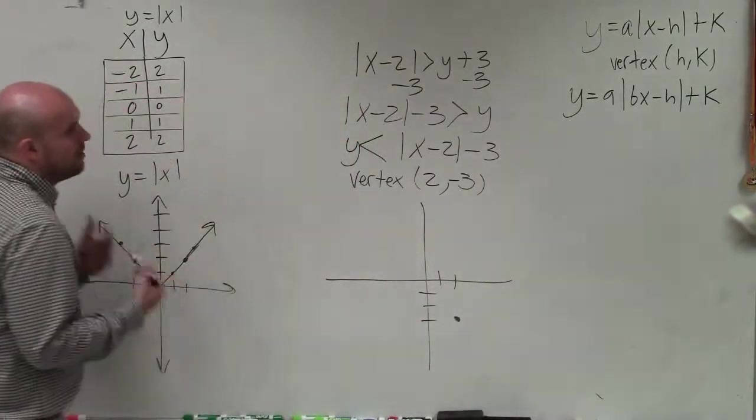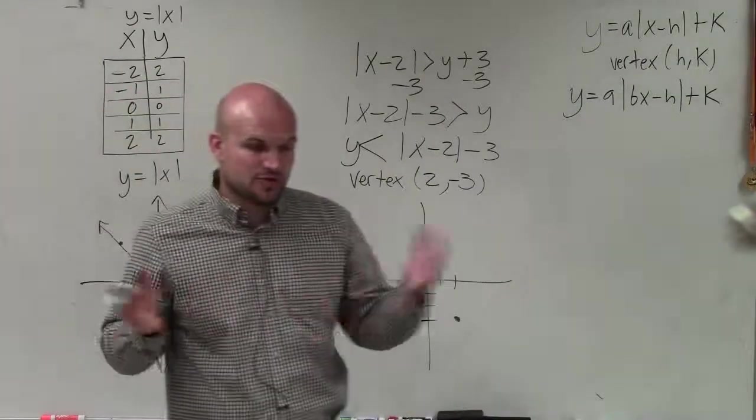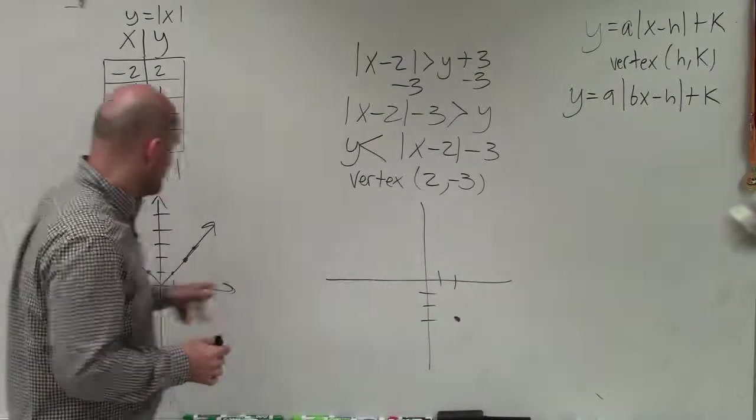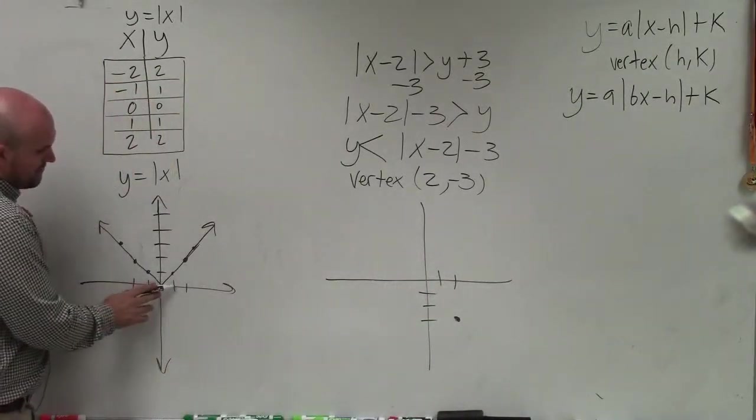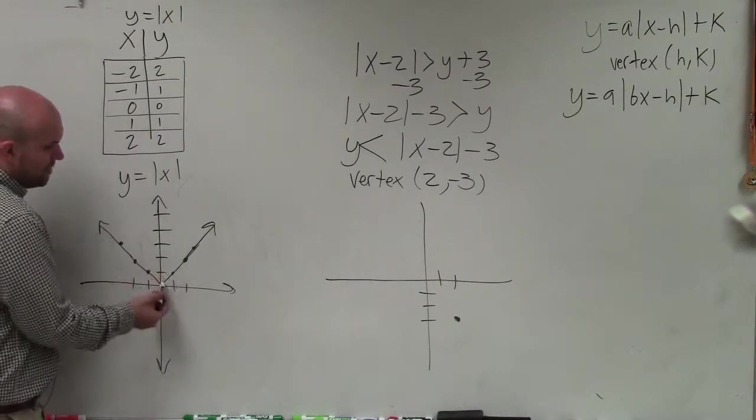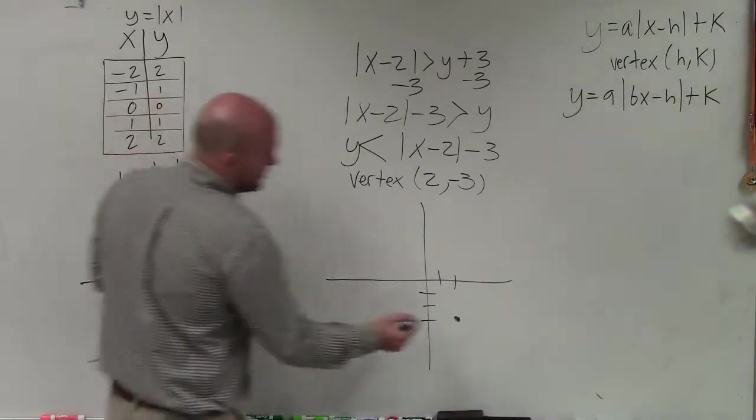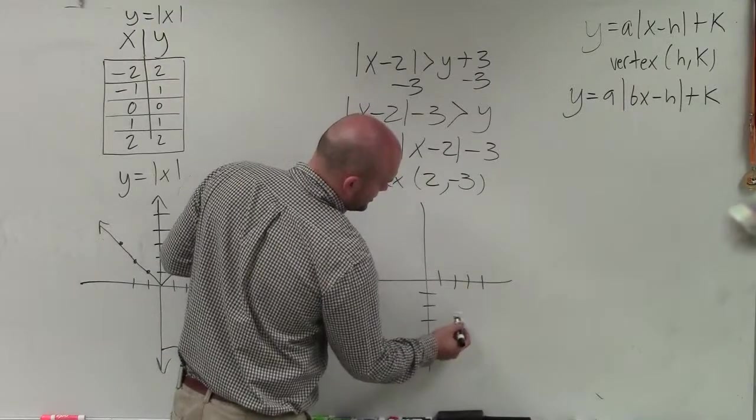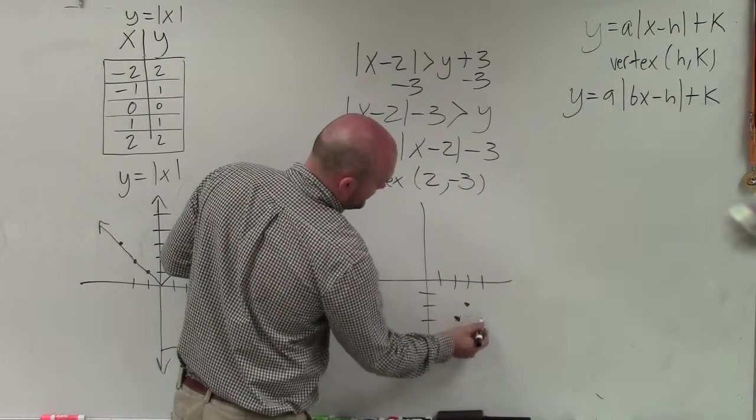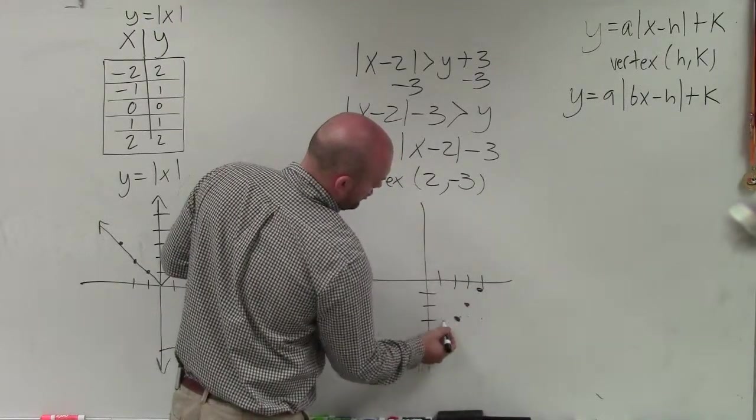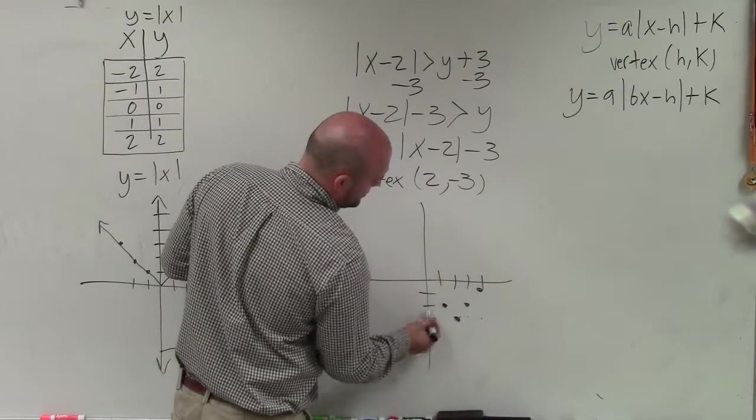Now, I notice that there's no other transformation that I have in my graph. There's no compression or stretching. So therefore, I can just follow the pattern of the parent graph: over 1, up 1, over 2, up 2, from my vertex. So I'll just go over 1, up 1, over 2, up 2. Over 1, up 1, over 2, up 2.